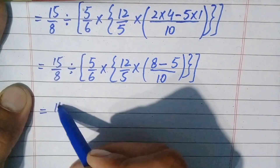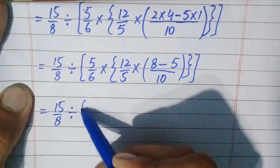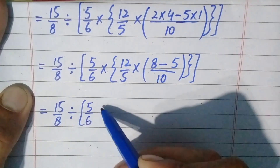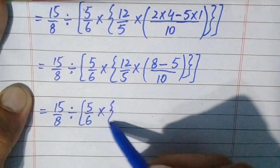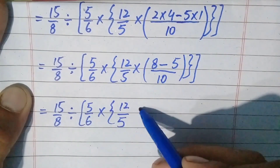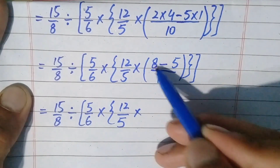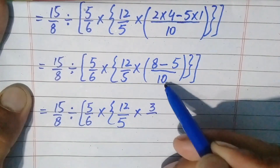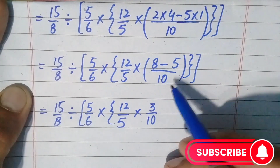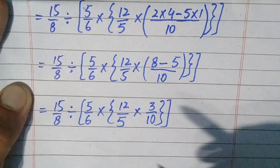Writing the remaining question: 15/8 divided by square bracket of 5/6, multiply, brace open, 12/5, multiply. Let's subtract the numbers in the numerator: 8 minus 5 is 3, and 10 comes in the denominator. So here the parentheses are eliminated — only braces and square brackets are left.